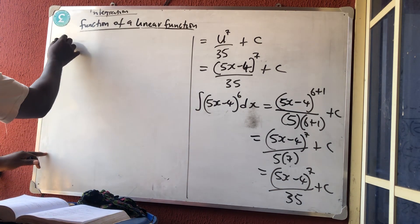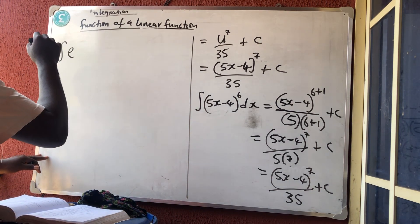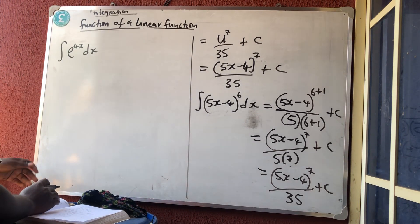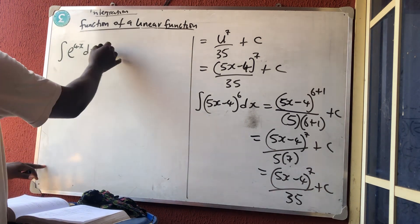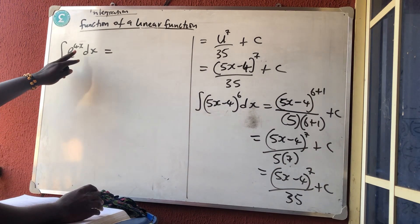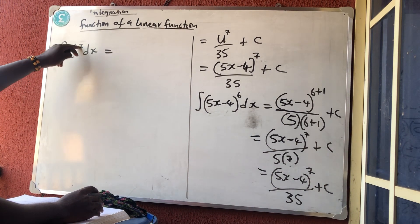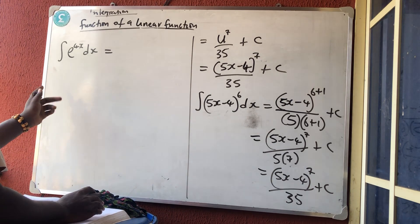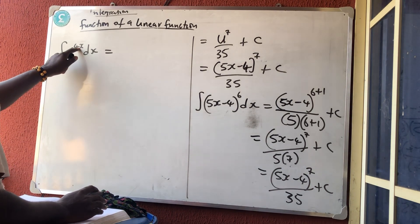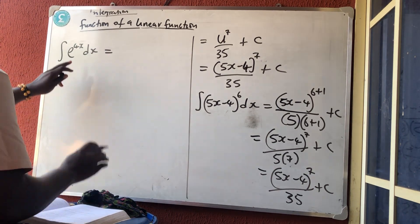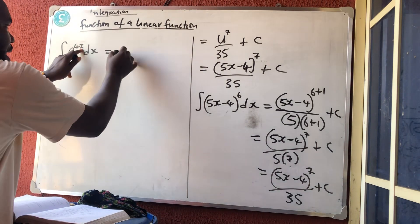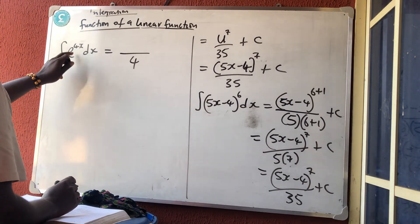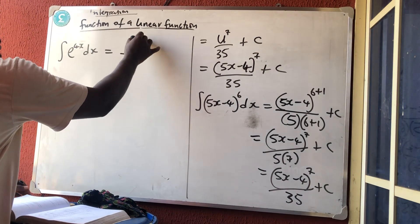Next example: the integral of e raised to power 4x dx. Normally in differentiation we differentiate the bracket and multiply, but in integration we differentiate the bracket, use it to divide the integral of everything. Differentiating 4x gives 4, which we place at the denominator. The integration of e raised to a power is just e raised to that same power — it doesn't change — plus a constant.